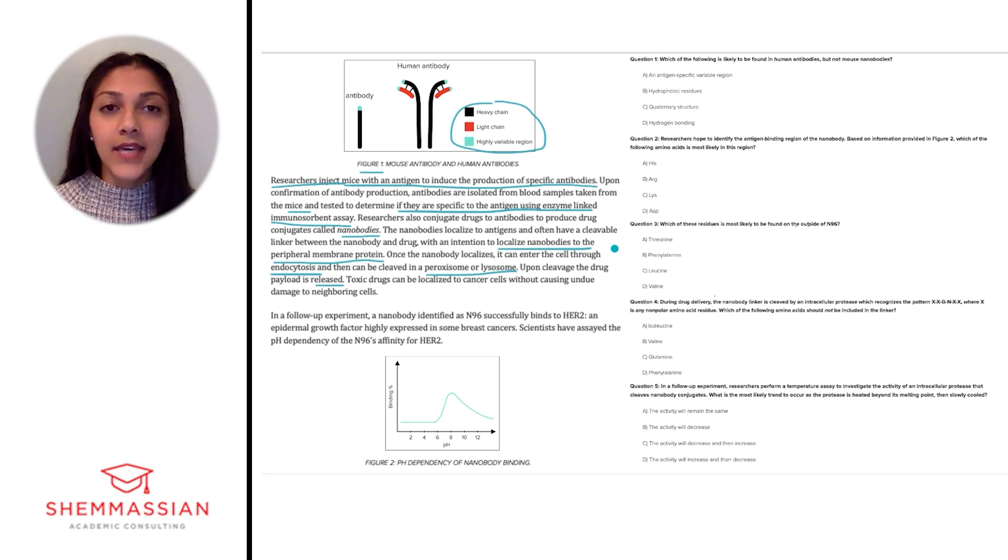The passage tells us that nanobodies localize to antigens with the intention to localize to a peripheral membrane protein. The nanobodies that enter the cell through endocytosis and once they're inside the cell, they're cleaved in a peroxisome or a lysosome and the drug is released.